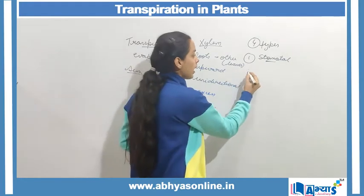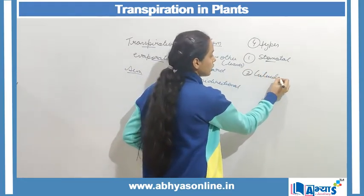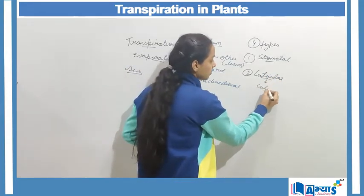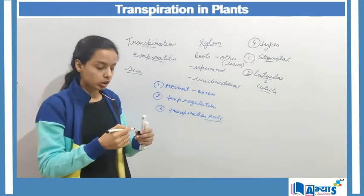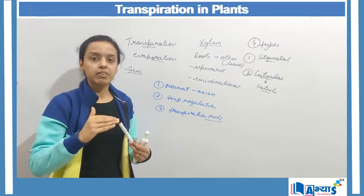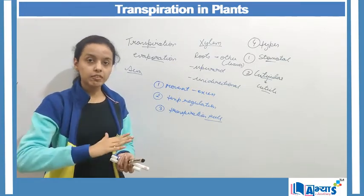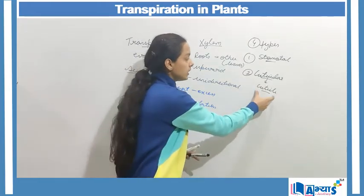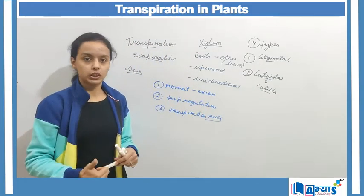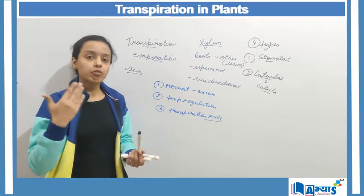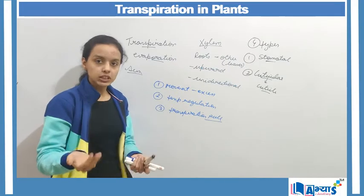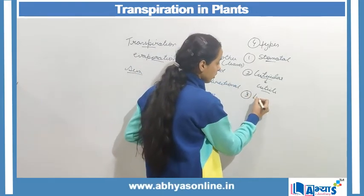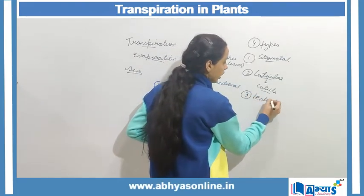The second type is cuticular transpiration, which comes from the word cuticle. The cuticle is a waxy, waterproof layer on the epidermis — the topmost layer of the leaf. This cuticle helps in the prevention of transpiration. When there is transpiration from these cuticle cells, it is known as cuticular transpiration, and it occurs in very small amounts.